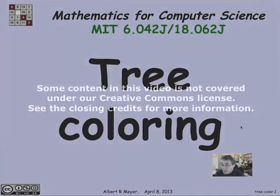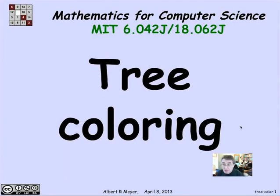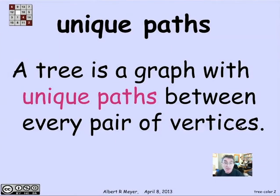Now we can use the unique path characterization of trees to very quickly figure out that every tree is two colorable. We know that a tree is a graph with unique paths between every pair of vertices.